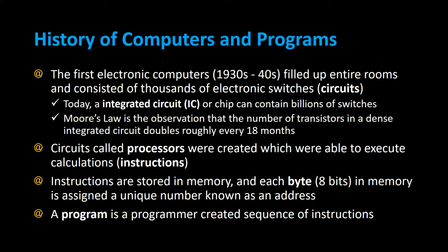The first electronic computers from the 1930s to 40s filled up entire rooms and consisted of thousands of electronic switches called circuits. Today, an integrated circuit — an IC chip — can contain billions of switches. Moore's Law is the observation that the number of transistors in a dense integrated circuit doubles roughly every 18 months.